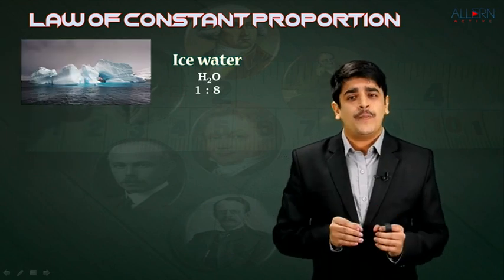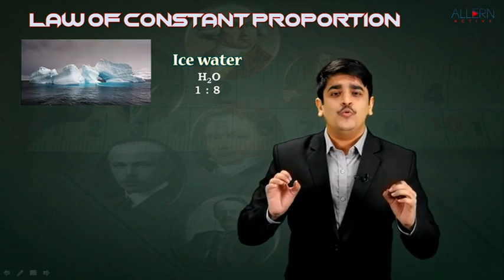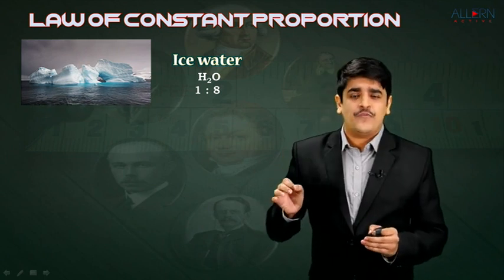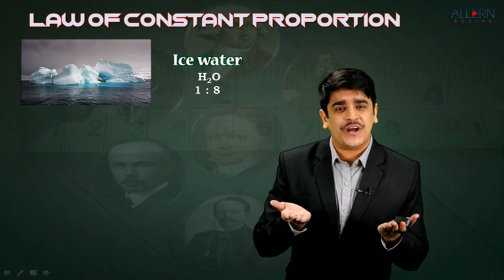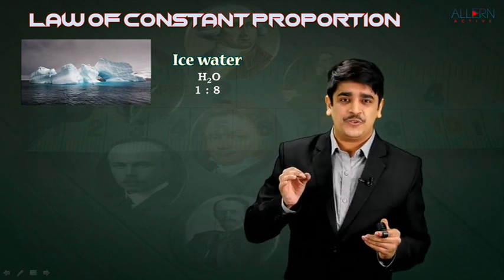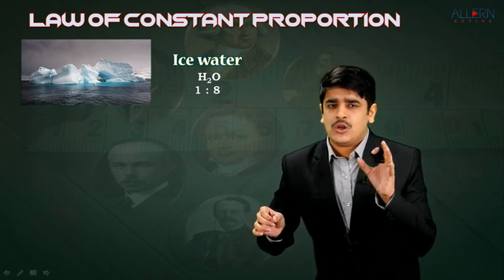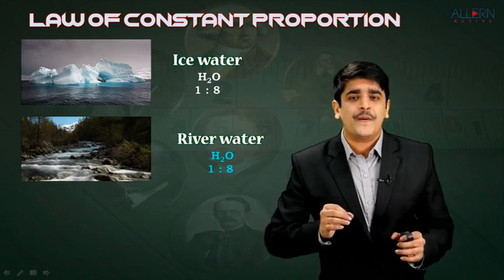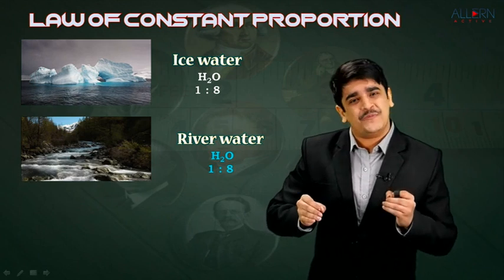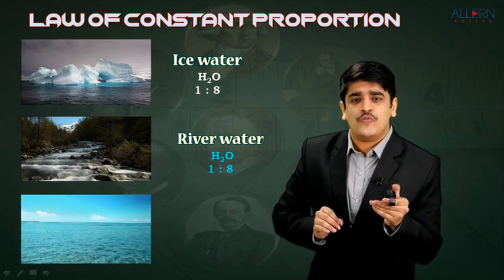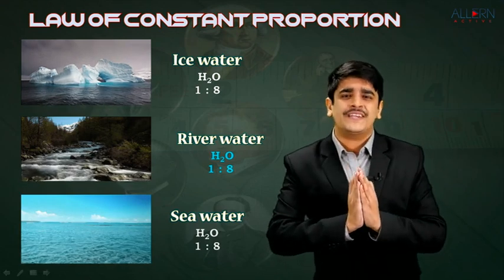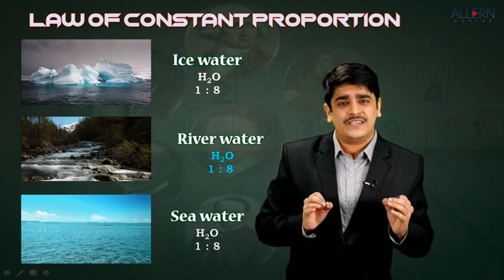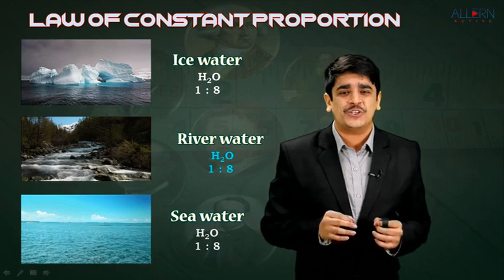He says that when we talk about water — whether packed in polar ice caps — we get the formula H₂O. We have a total of two atoms of hydrogen and a single atom of oxygen. When you take the masses of hydrogen and oxygen into consideration, the ratio is 1 is to 8. This ratio is not only valid for polar ice water — even river water has the exact same formula and the same ratio. Even water present in the sea has exactly the same formula, and the ratio in which hydrogen and oxygen combine is also exactly the same: 1 is to 8.